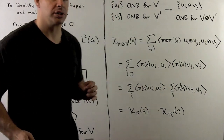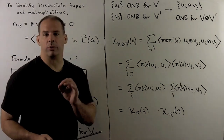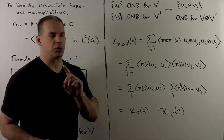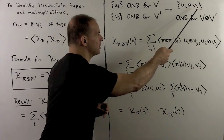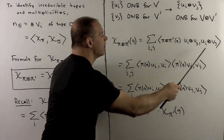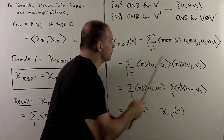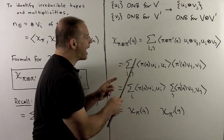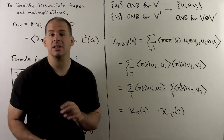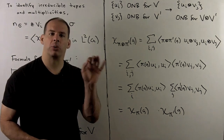Now let's apply this to a tensor product. Suppose we have pi, V and pi prime, V prime. The u's give us an orthonormal basis for V, the v's give us an orthonormal basis for V prime. Then we have an orthonormal basis for the tensor product using all u sub i tensor with v sub j. We apply our definition of character, write everything out, then apply our definition of inner product on the tensor space — separating each inner product into two. These are all in i, these are all in j, so this separates into two sums. The first sum gives the character of pi, the second gives the character of pi prime. So we see that tensor goes to a product of characters.